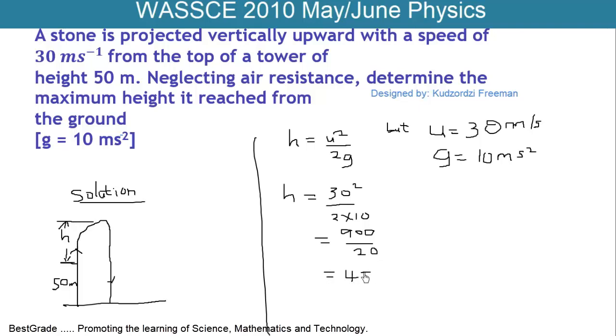So this results in 45 meters. 900 over 20 is 45 meters.